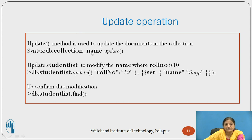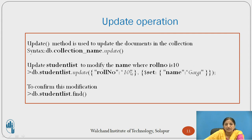Next is the Update operation. The update method is used to modify documents in a collection — changing field values or deleting values. The syntax is db.collectionname.update(). For example, to update student_list and modify the name where role number is 10, use db.studentlist.update({role_number: 10}, {$set: {name: 'Gargi'}}). To confirm this modification, display the document using db.studentlist.find().